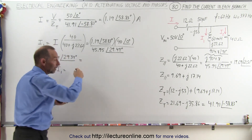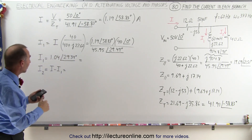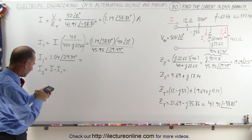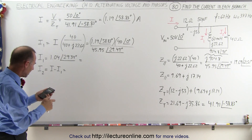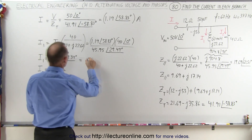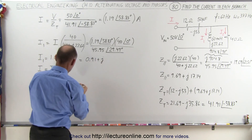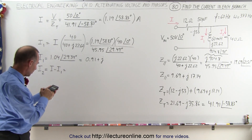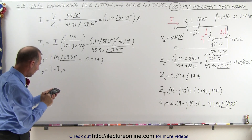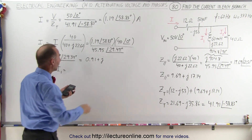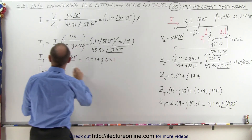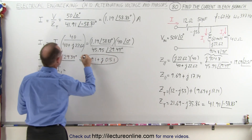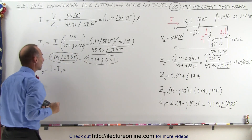Converting I1 into real and imaginary parts: cosine of 29.34 times 1.04 gives us 0.91. So I1 equals 0.91 plus J, and sine of 29.34 times 1.04 gives us 0.51. So now we have the current I1 in terms of both the real and imaginary part and the magnitude and phase angle.